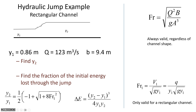We have a rectangular channel and I'd like you to find y2 — the downstream depth. To do it you'll need to assess the Froude number upstream, Fr1. Since it's a rectangular channel you can use either the full Froude number equation or the abbreviated approach. Then the second part of the example asks: what's the fraction of the initial energy that was lost? So you need to find ΔE and then ΔE divided by the initial energy at station 1.